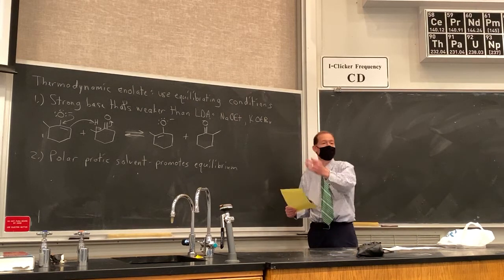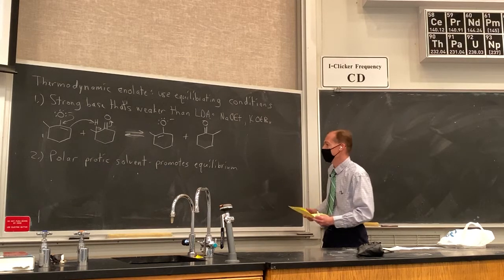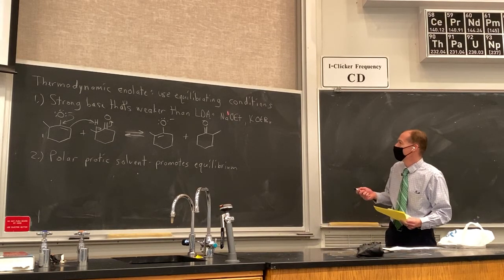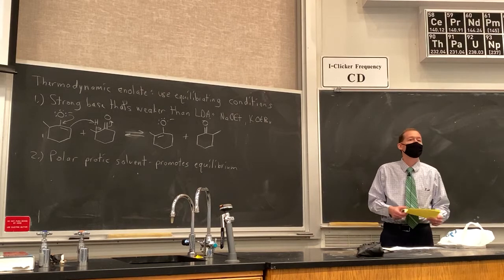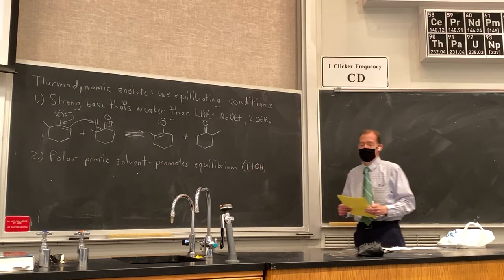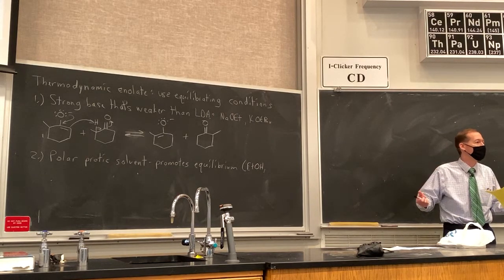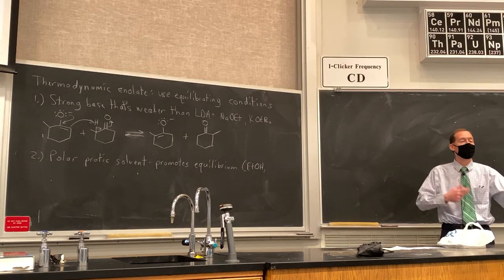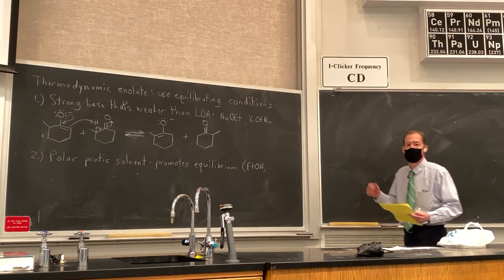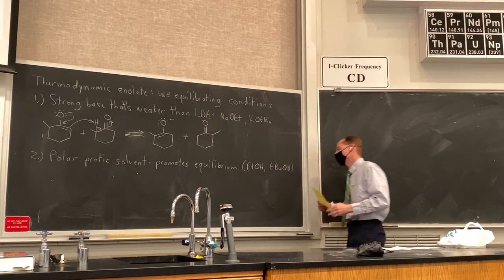Once you get the ketone back, the base deprotonates it again and gives us the enolate, and before too long the thermodynamic enolate is the major enolate in solution. The most common polar protic solvents used are the conjugate acids of our alkoxide bases. If using ethoxide, we'd use ethanol as the solvent, because protonating the enolate with ethanol generates ethoxide — the same base already present. Using a different alcohol would give a jumble of bases, which is problematic. So we use either ethanol or tert-butyl alcohol.